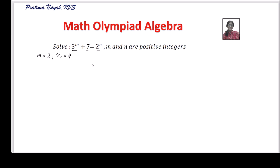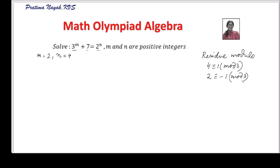So let us start. We will take the help of residue modulo — that is a concept in number theory. Residue modulo means: I can write 4 is equivalent to 1 modulo 3, which means when 4 is divided by 3 we get remainder 1. Similarly, 2 is equivalent to negative 1 modulo 3, which means when 2 is divided by 3 the remainder is negative 1.